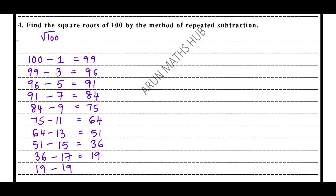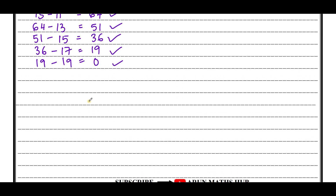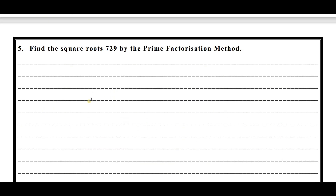Then 36 minus 17 gives 19. The next odd number is 19, and 19 minus 19 is 0. How many times did we subtract? 1, 2, 3, 4, 5, 6, 7, 8, 9, 10. Therefore the square root of 100 is 10. This is the method of repeated subtraction — keep subtracting odd numbers from the result until you reach zero. Do subscribe the channel and download the worksheet from my Telegram group or WhatsApp channel.